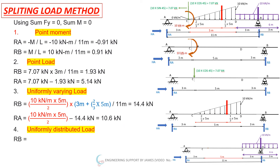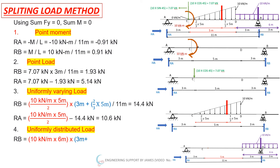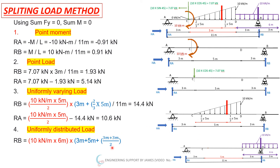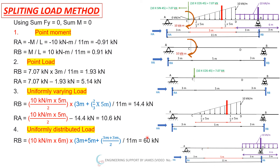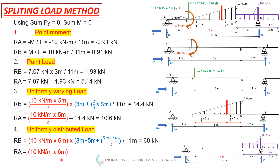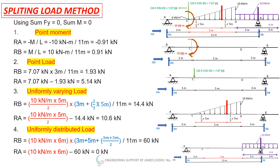For the uniformly distributed load of 10 kN/m over 6 m: total load = 60 kN. Its lever arm from A is 3 + 5 + (3+3)/2 = ... RB = 60 × lever arm / 11 = 60 kN. RA = 10 × 6 − 60 = 0 kN. This UDL provides no reaction at RA in this configuration.